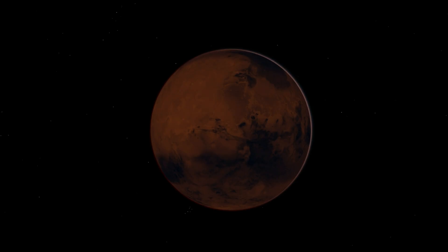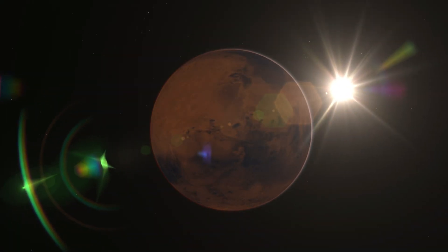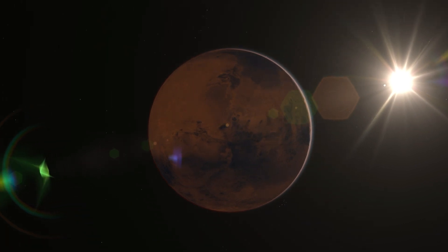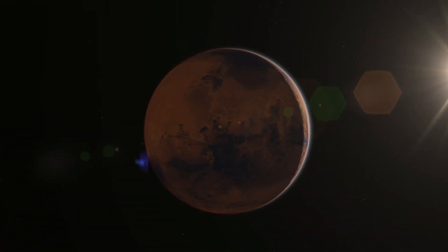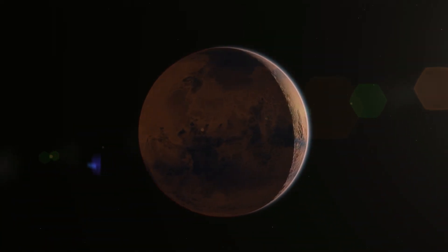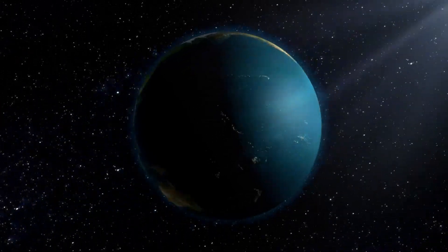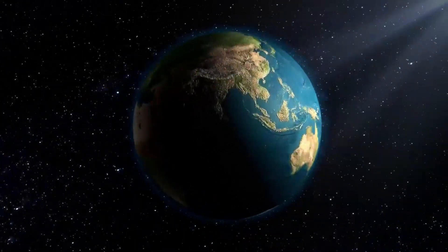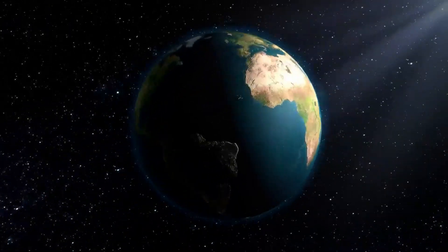Planetary Scale: Zooming out, we encounter the planetary scale, where celestial bodies like Earth, Mars, and Jupiter reside. Earth, with its diverse landscapes and ecosystems, is but one of many planets in our solar system.